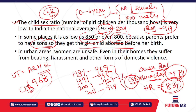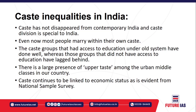In urban areas also, women are unsafe because they suffer problems like harassment, beating, and other forms of domestic violence — not only in urban areas but also in rural areas. Now let us understand the caste-based inequalities in India.